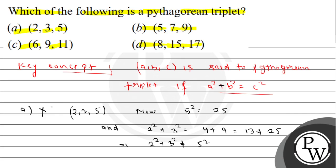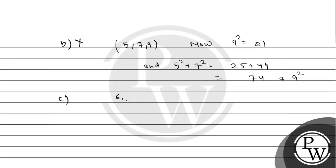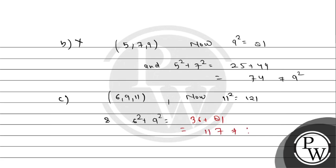We will check option C: 6, 9, 11. How much is 11 squared? It is 121. And 6 squared plus 9 squared: how much is 6 squared? It is 36. How much is 9 squared? It is 81. So 36 plus 81 is 117, which is not equal to 121. So option C is not a Pythagorean triplet.